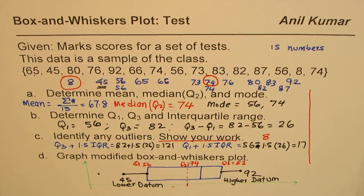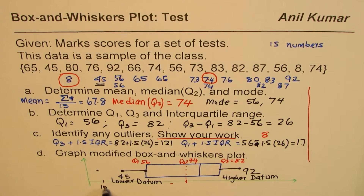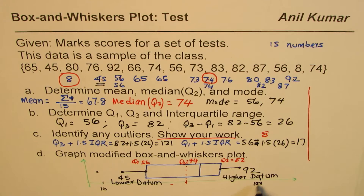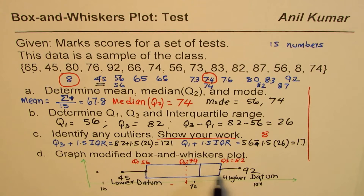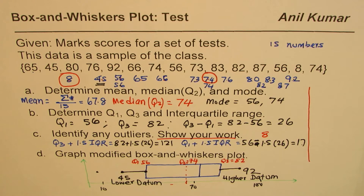On the number line, mark values from around 10 to 100 in groups of tens. Place your box diagram accordingly — for example, the 74 mark should align near 70 on the scale. Make sure to label the quartile values clearly in the diagram. I hope that helps — go through this video once again to understand the concepts. I'm Anil Kumar; you can always share and subscribe. Thank you and all the best.